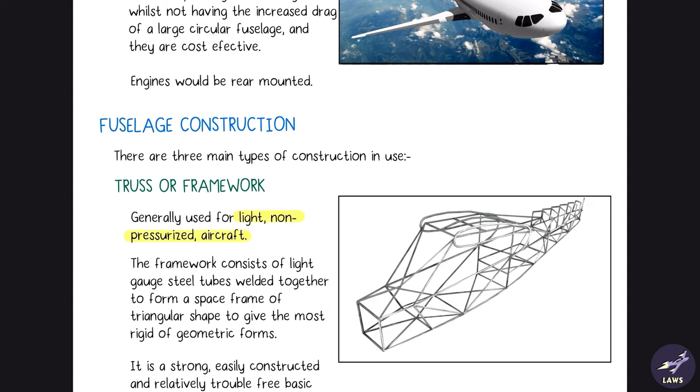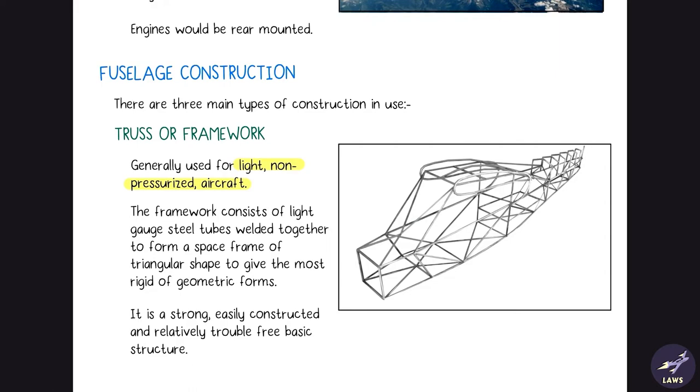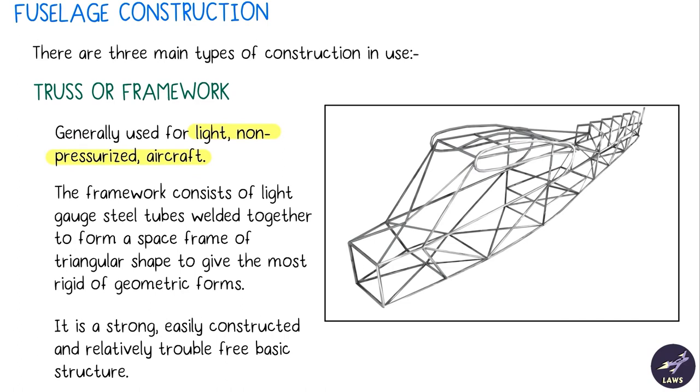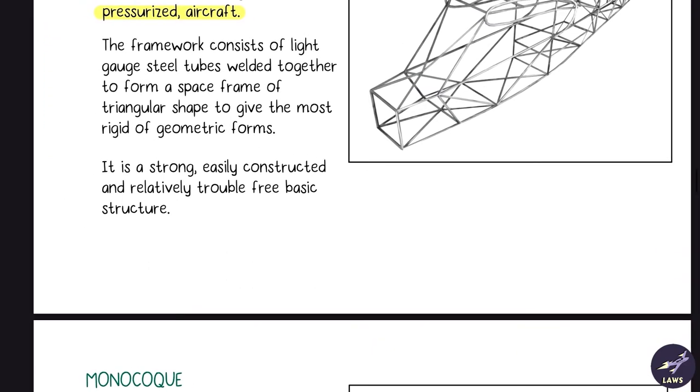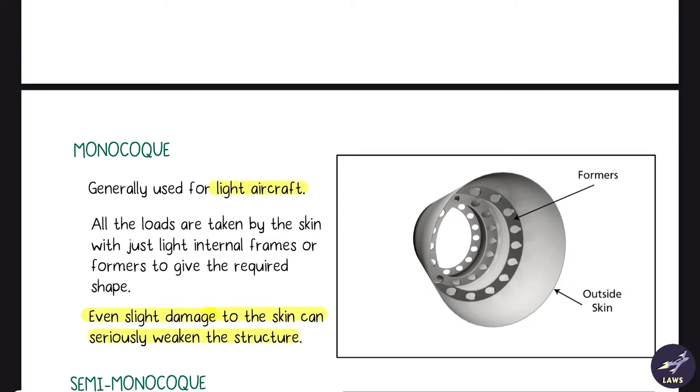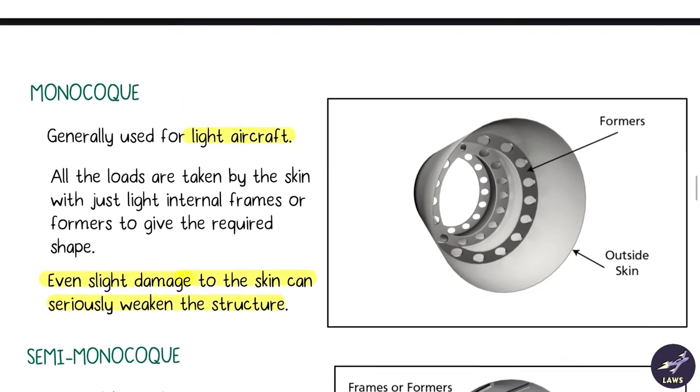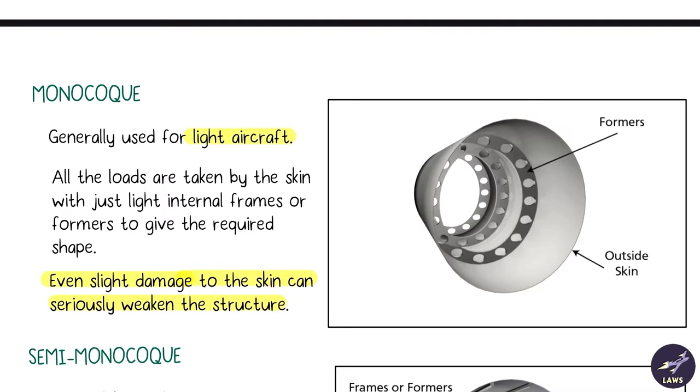Then we have two concept designs known as oval and double bubble. These are concepts, not practically applied yet. Next we have fuselage construction. There are three main types of constructions in use. First is truss or framework, generally used for light and non-pressurized aircraft. Then we have monocoque designs, generally used for light aircraft. There is a skin and underneath formers. The formers or frames just provide shape to the fuselage. Because there is nothing to strengthen the skin besides formers, it can be damaged quite easily. Even a slight damage to the skin can seriously weaken the structure.